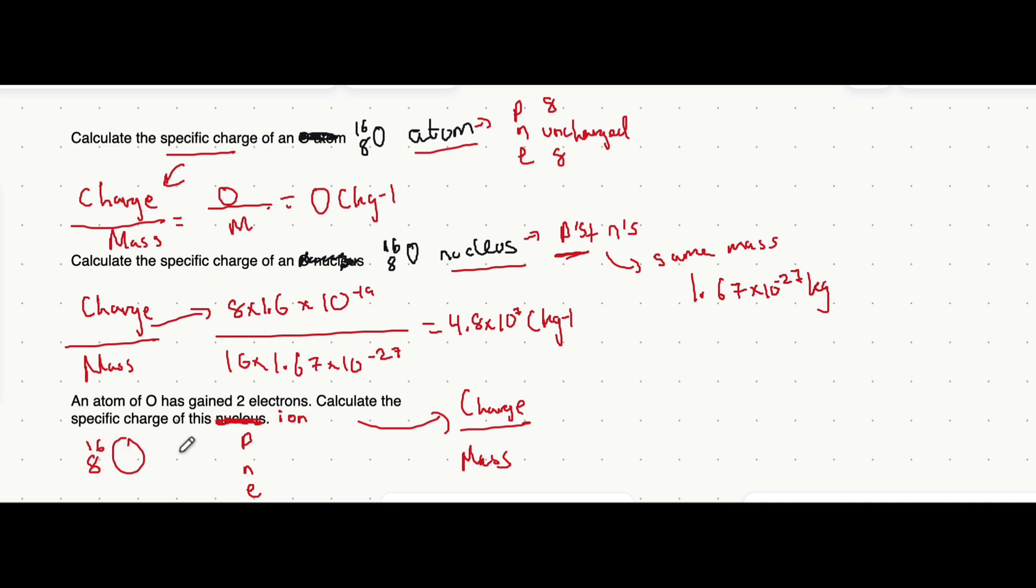But it tells you that this atom gains 2 electrons. We'd expect the electron number to be 8 also, but because it gains 2 electrons, there's going to be 10 electrons. The number of neutrons is still going to be 8, because it's the mass number take away the proton number. And that stays the same. So, unlike an atom, where the number of protons is balanced by the number of electrons, the number of electrons is more, meaning we have 2 more of a negative charge.